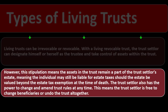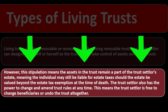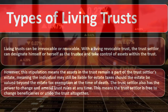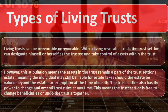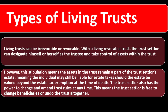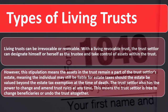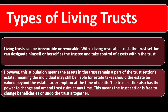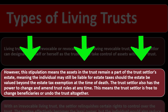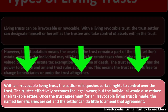With a revocable trust, the assets remain part of the settler's estate, meaning the individual may still be liable for estate taxes if the estate is valued beyond the estate tax exemption at the time of death. However, the trust settler has the power to change and amend trust rules at any time, including changing beneficiaries or undoing the trust altogether.